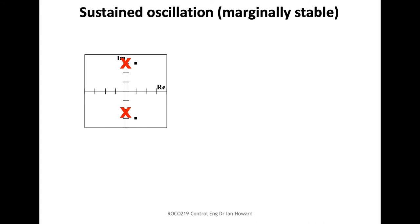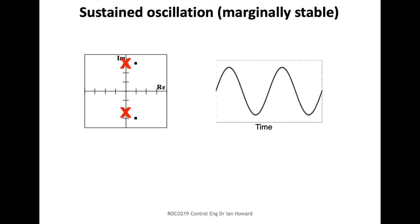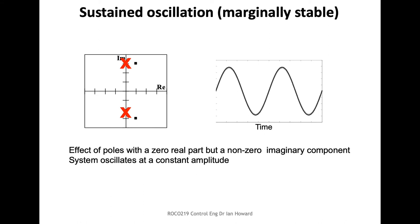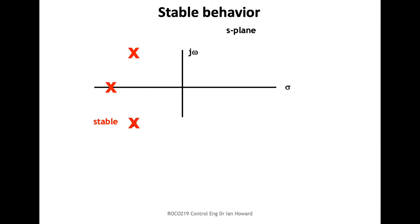What happens if the poles are right on the imaginary axis with no real component? This corresponds to an oscillation with no increase and no decrease — a sustained oscillation at a fixed amplitude. However, in a real system, if a component heats up or a slightly different component is used, the pole could shift slightly to have a tiny real part, making the system go unstable. So as it is, it's marginally stable, though generally not something you'd want for a control system.